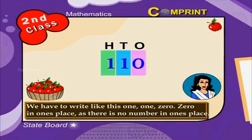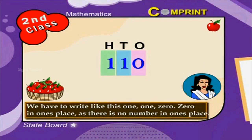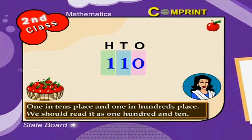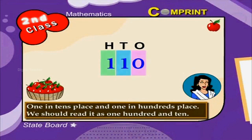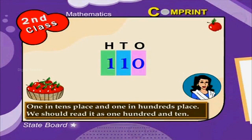For 110: zero is in ones place, one is in tens place as there is no number in ones place, and one is in hundreds place. We should read it as 110.